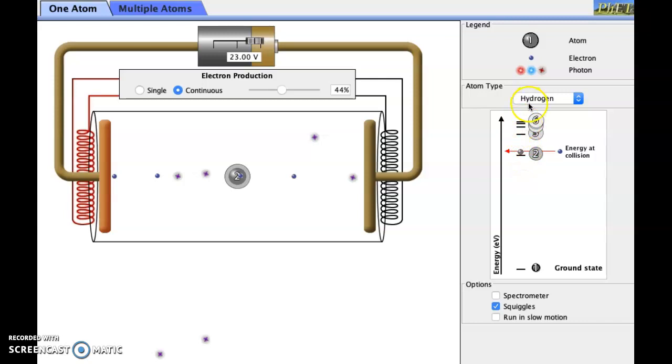The vertical axis here is energy, so the spacing of these lines tells us that the energy levels in our atom, in this case hydrogen, are not evenly spaced. They get closer together as you go up in energy. We have a little gray dot here representing the one electron that exists inside a hydrogen atom. And then there is this arrow here indicating the energy at collision. So this is the energy that one of these fired electrons has when it reaches the atom.